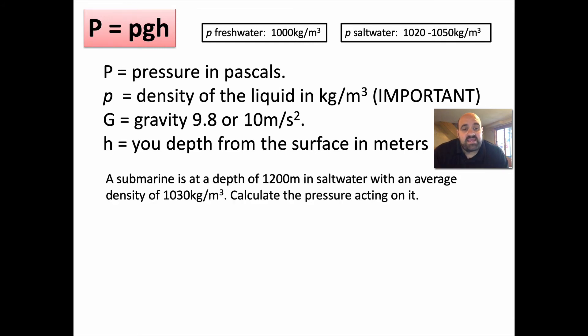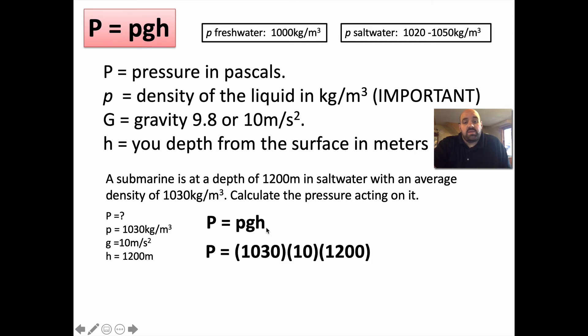So let's just look at a practice problem. A submarine is at a depth of 1,200 meters in salt water with an average density of 1030 kilograms per meter cubed. Calculate the pressure acting on it. Well, we're going to list our variables. We know that we want to figure out pressure. Calculate the pressure. Sorry, my dryer keeps beeping. It's getting a little bit annoying. Density equals 1030 kilograms per meter cubed. g is 10. And the h is 1,200. Well, the formula is pressure equals ρgh. We have all these variables. We just basically throw them in and multiply them all together. And we get an enormous pressure, 12,360,000 pascals. So that's all you do with this formula. Pressure equals ρgh. It's just a plug-and-chug formula after you derive it.